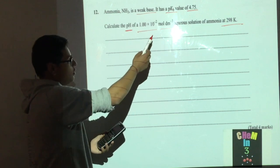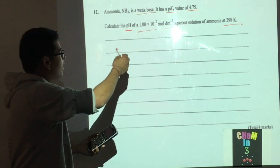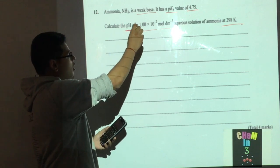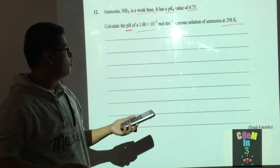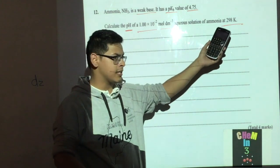The substance is a weak base with a pKB value of 4.75. We need to calculate the pH of a 1 × 10^-2 mol/dm³ aqueous solution of the substance at 298K.